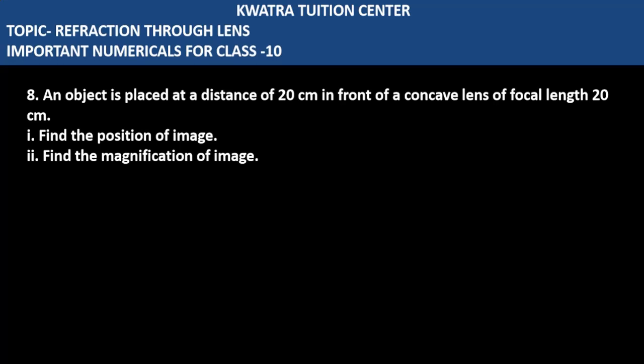Let's start with question number 8. It says, an object is placed at a distance of 20 cm in front of a concave lens of focal length 20 cm.